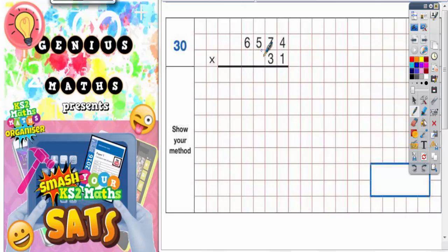Question 30. 6574 multiplied by 31. We're going to use the magic zero method.